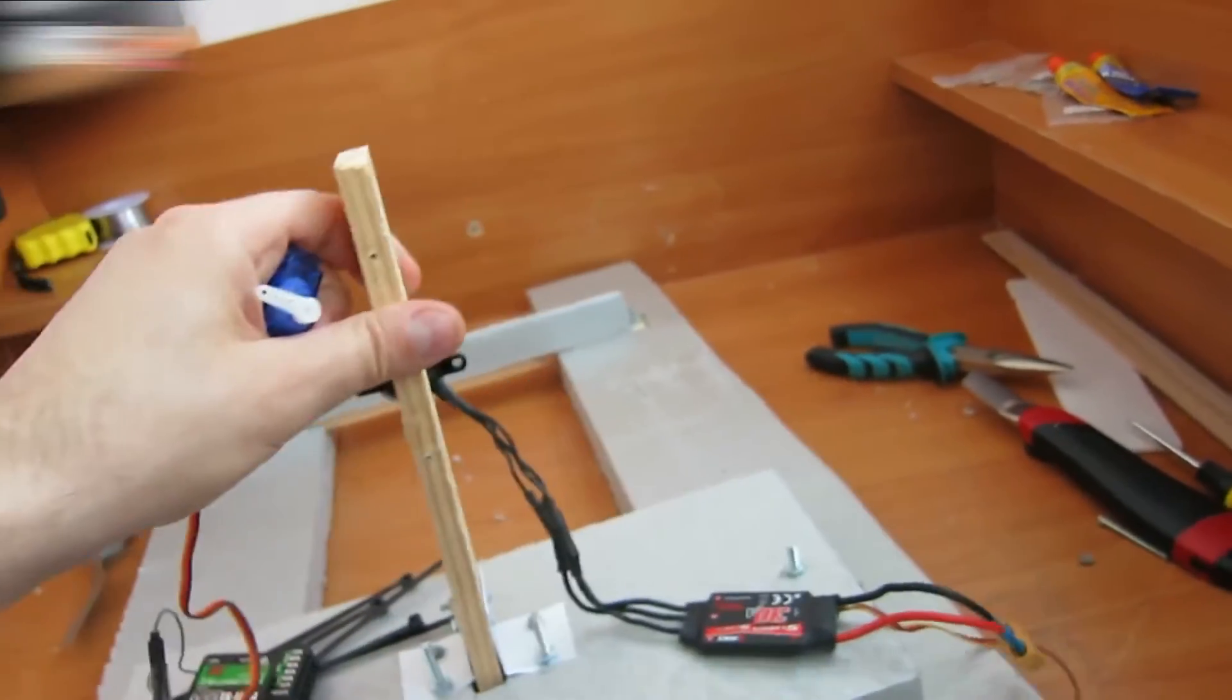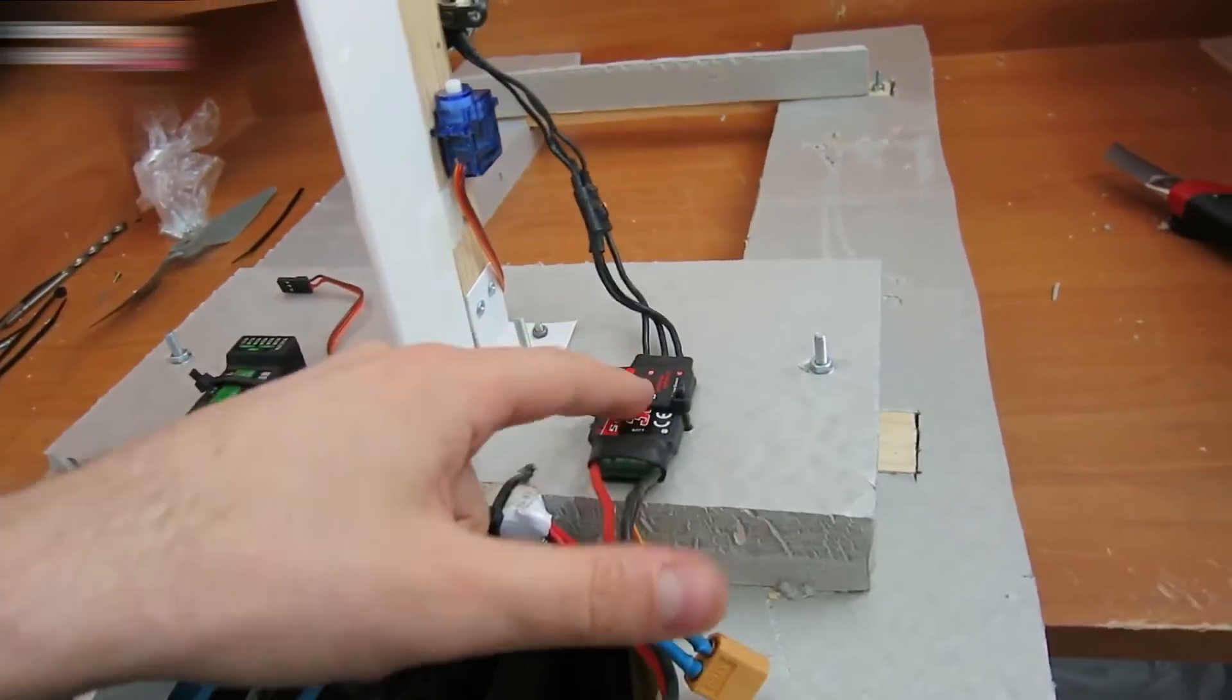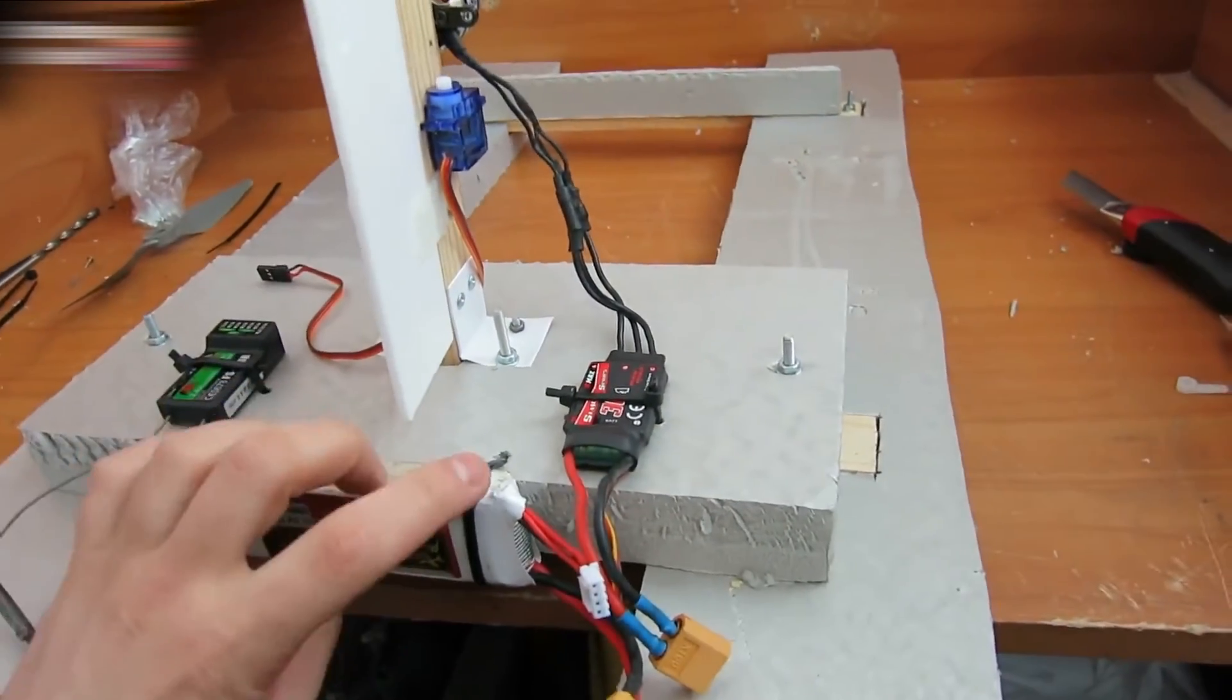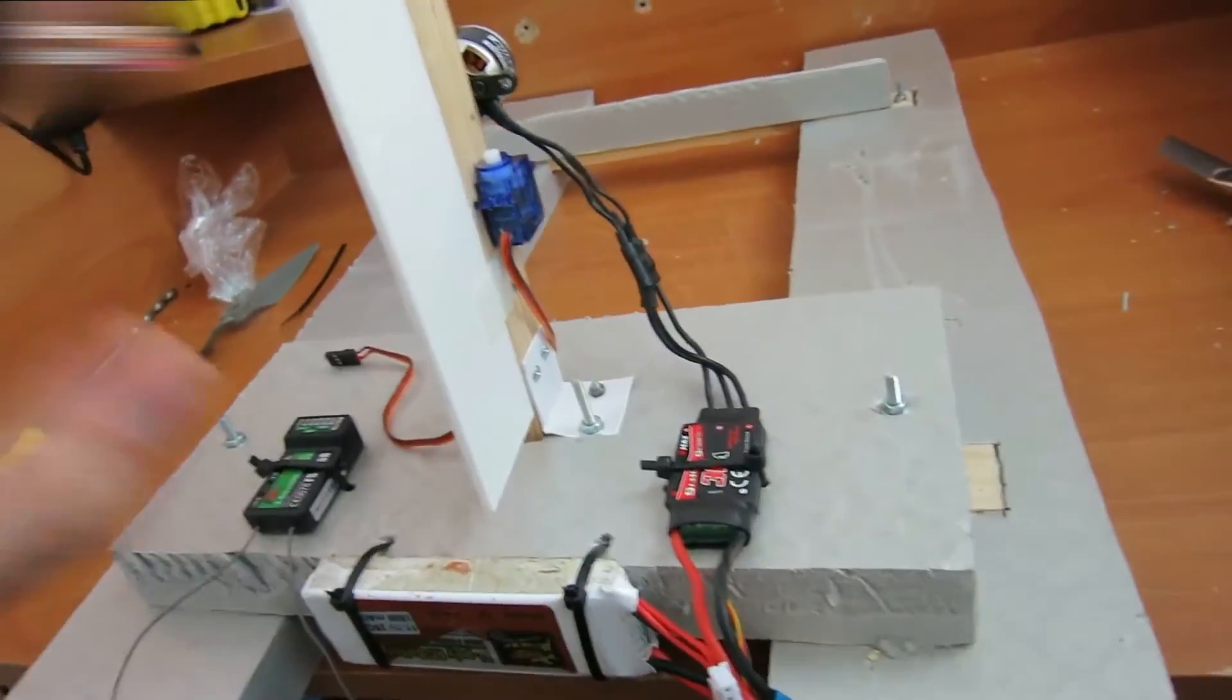Fix the rotation servo. Fasten the electronic parts with plastic ties. It's very easy. Use two ties here and one at each side here. Everything should be attached very tightly. Then the design is going to be sound.